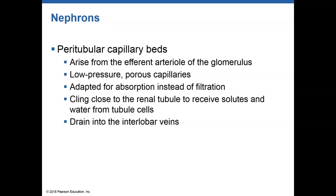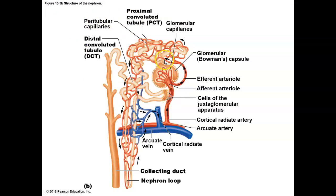We also have the peritubular capillary beds, which surround the nephron tubules. This is where, instead of filtration, we're going to have a lot of reabsorption and secretion occur. Peritubular capillaries allow for secretion of waste materials that couldn't go through via filtration, and absorption of materials in the filtrate that we don't want to lose — like water, glucose, or other important ions.